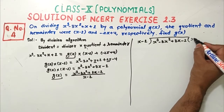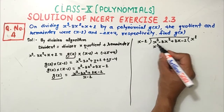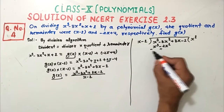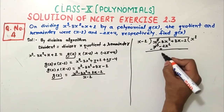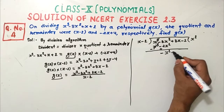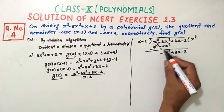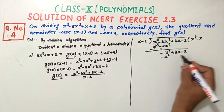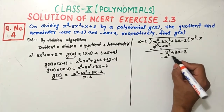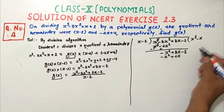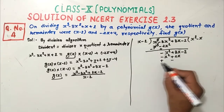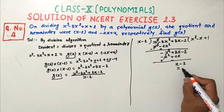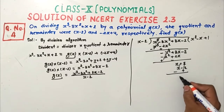To get x³, we multiply x² by x. Then x² into minus 2 gives minus 2x². After sign change (minus minus plus), we get plus 2x². The terms cancel: minus x² and plus 2x² give minus x². Continuing, x times minus 2 with sign change gives plus 2x. These terms cancel.